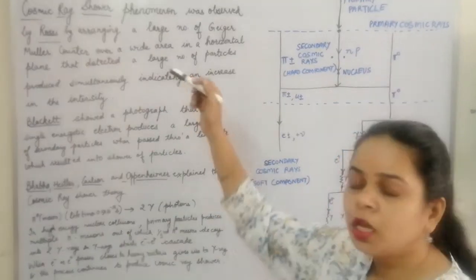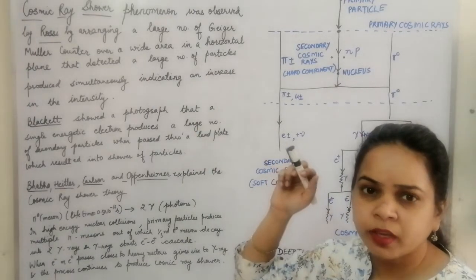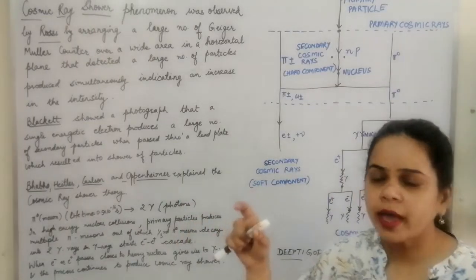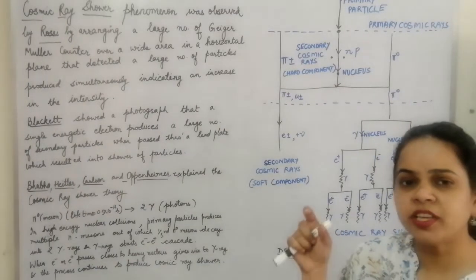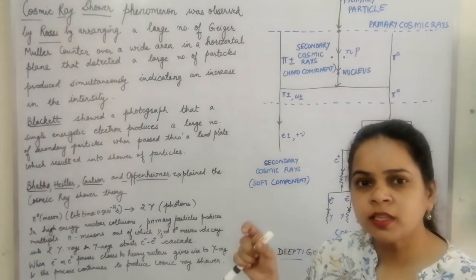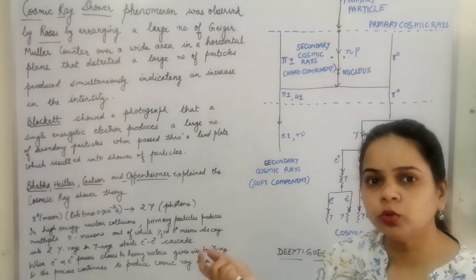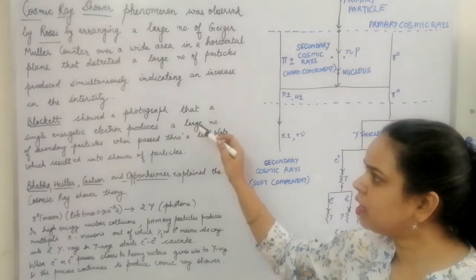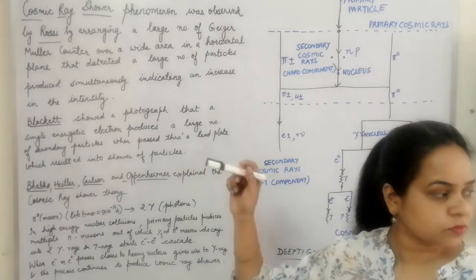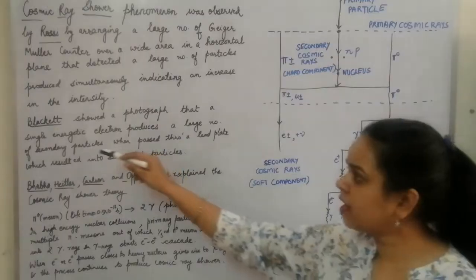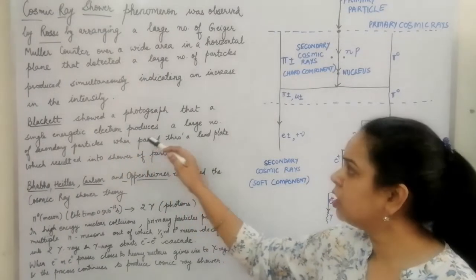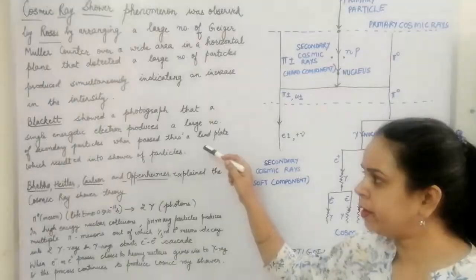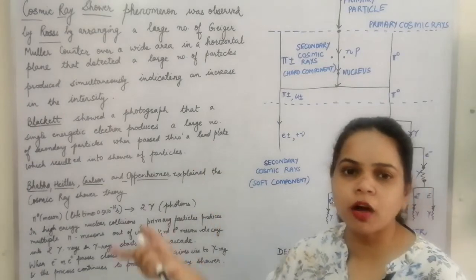Next, Blackett showed a photograph demonstrating that a single energetic electron is able to produce a shower. This single energetic electron produced a large number of secondary particles when passed through a lead plate, resulting in a shower of particles.